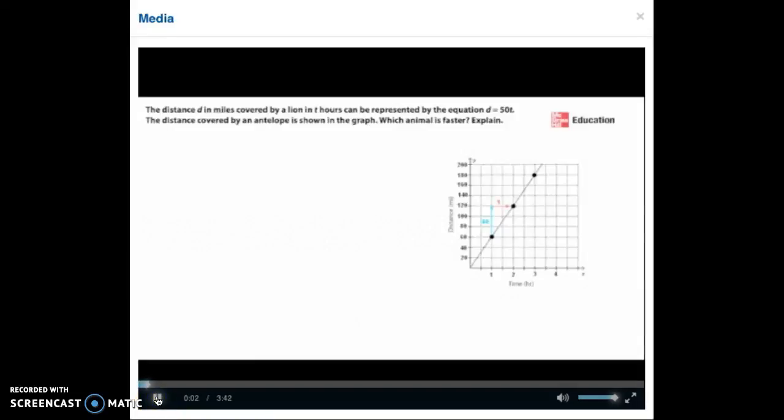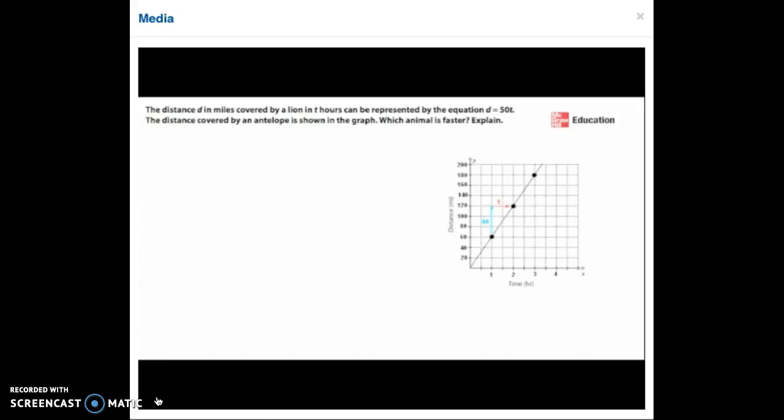McGraw-Hill Personal Tutors. The distance d in miles covered by a lion in t hours can be represented by the equation d equals 50t. The distance covered by an antelope is shown in the graph. Which animal is faster?